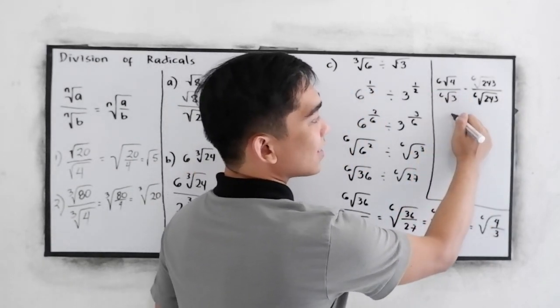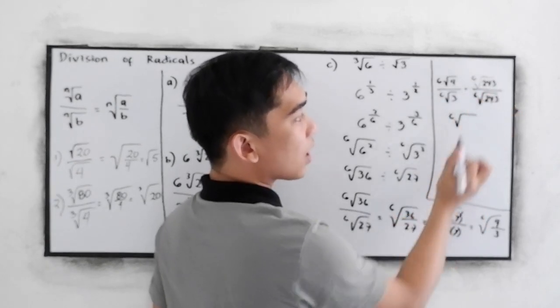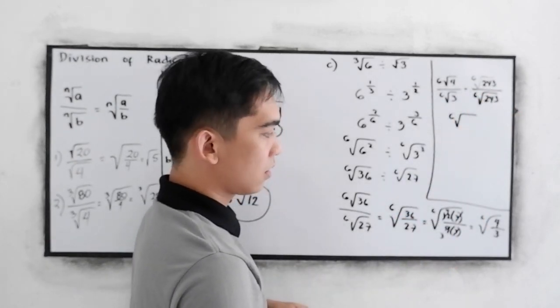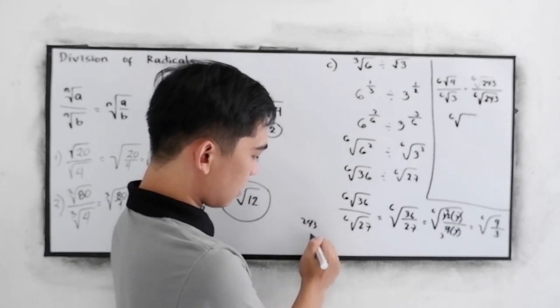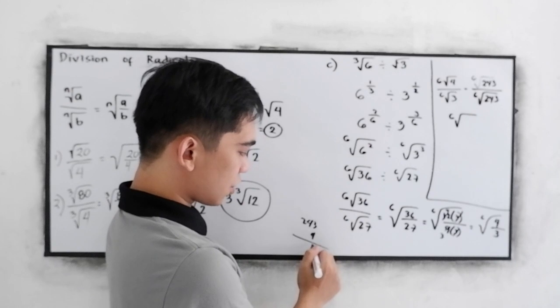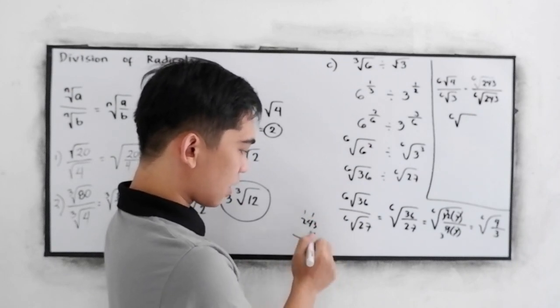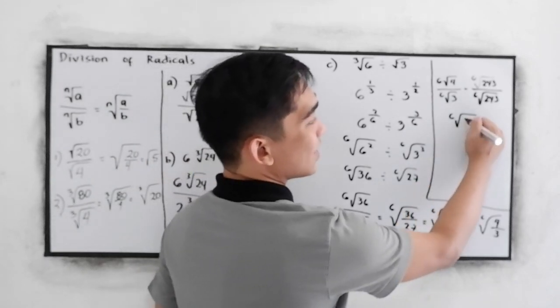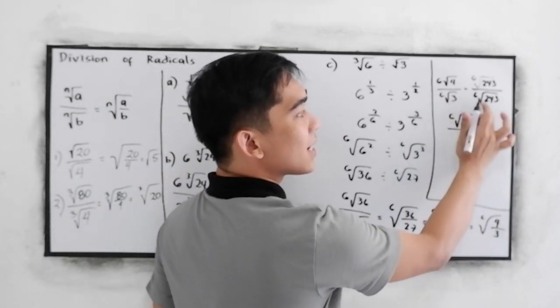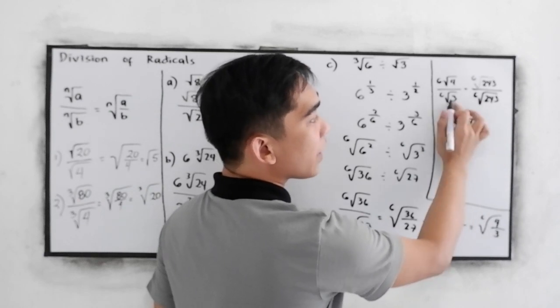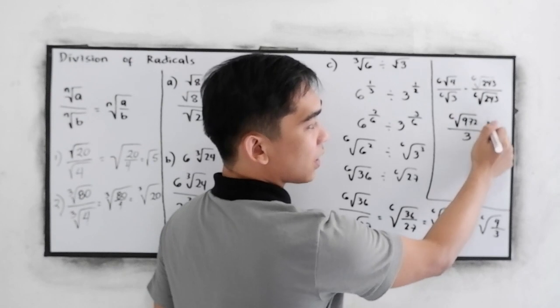We have 6 root of 4 times 243. 243 times 4 is, carry 1, 17, carry 1, 972. This will give us a perfect 6 root number that is equivalent to 3.